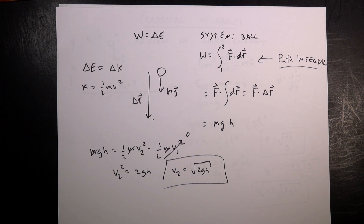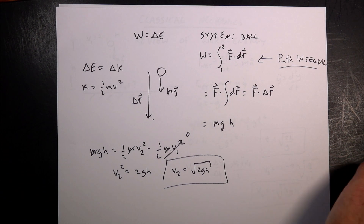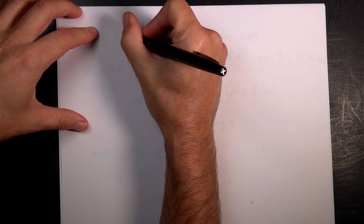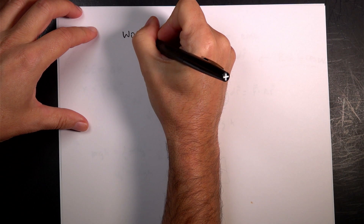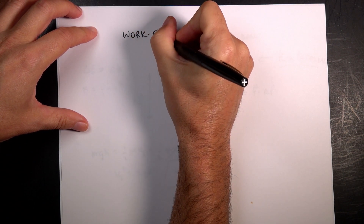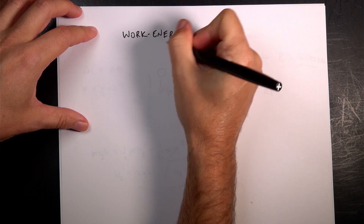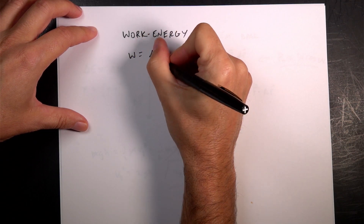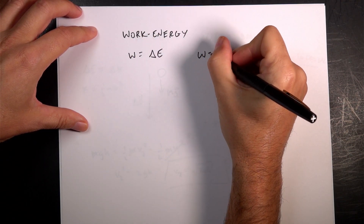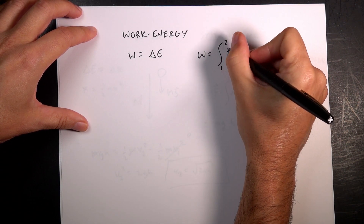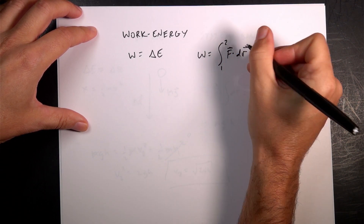Let's state the work-energy principle clearly: work equals a change in energy, and work is a line integral from point 1 to point 2 of F·dr.